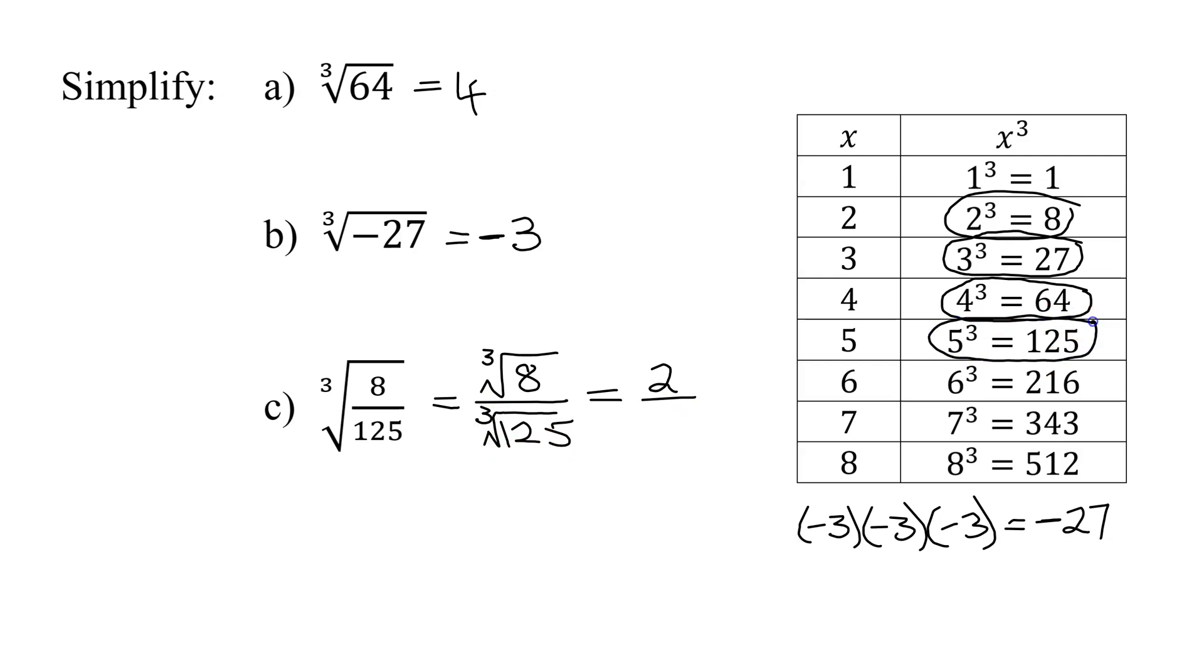125 is also a perfect cube. It's 5 cubed. So the cube root of 125 is 5. So the answer to part C is 2 fifths.